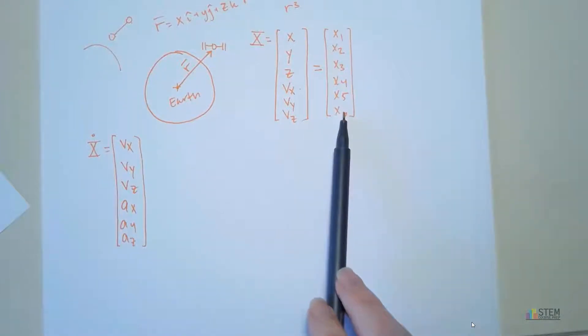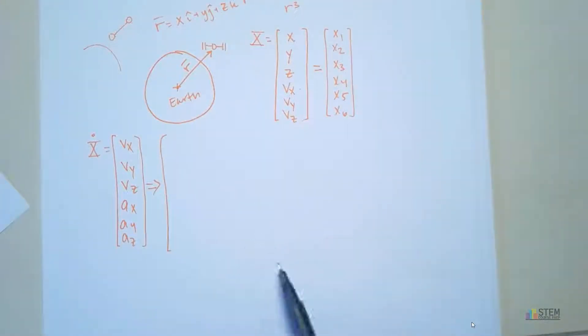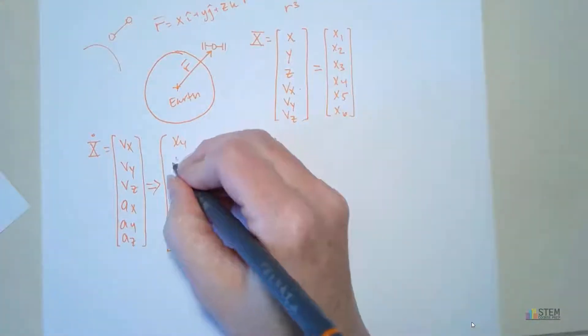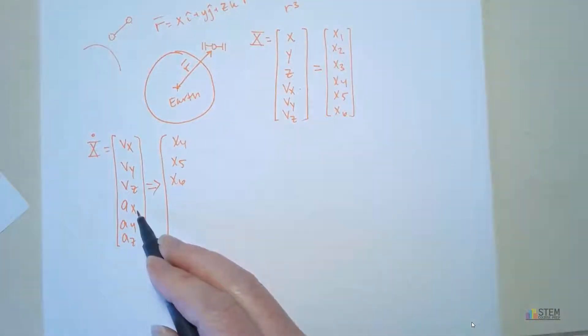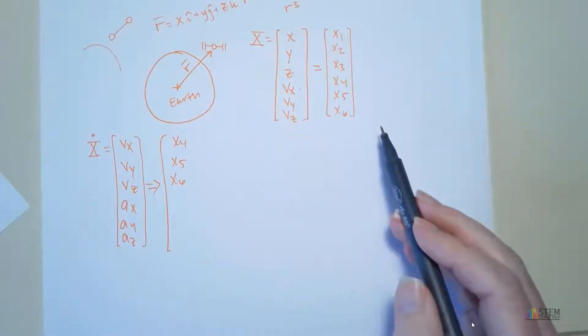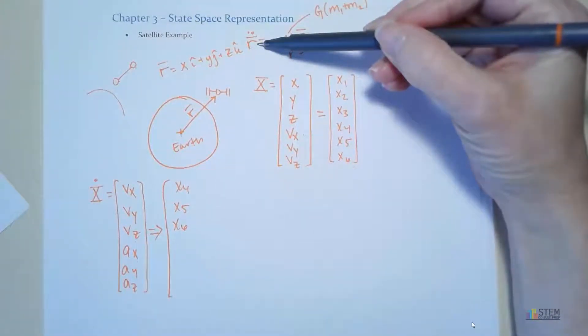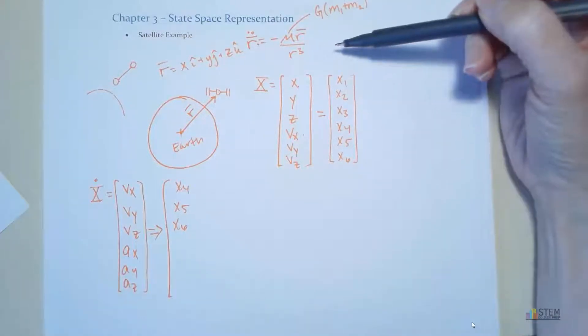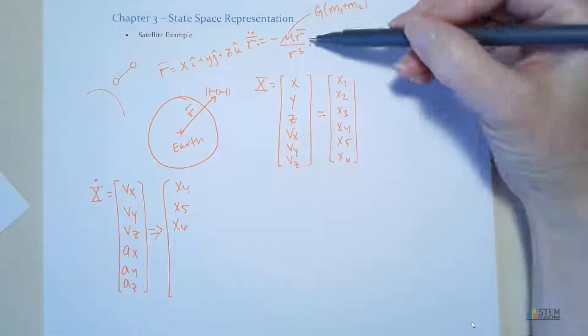Now I want to write everything in terms of these variables over here. So that'll be our last step. So VX is X4. VY is X5. VZ is X6. And now AX. Well, I don't have AX over here. So where am I going to get that from? Well, let's look. What is this? This is R double dot. So this is the acceleration equation, right? Notice it's got that bar, so it's a vector equation. That means you could split this up into the X, Y, and Z components. So that's where we get AX, AY, and AZ.